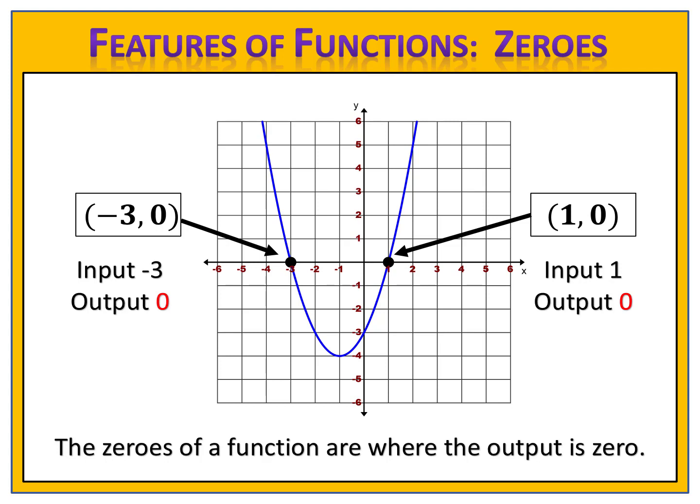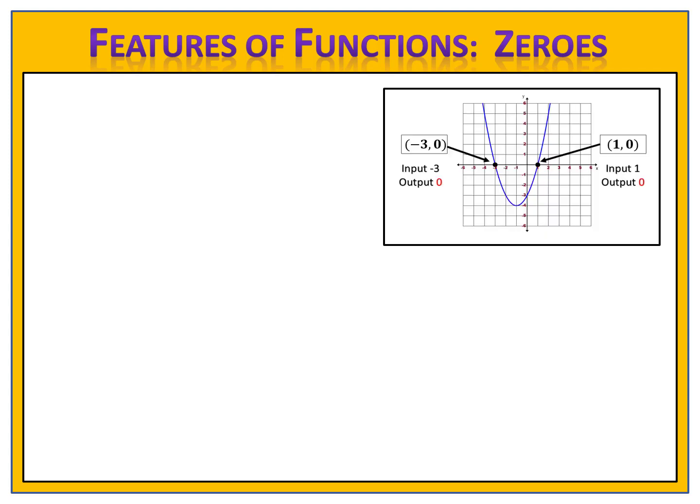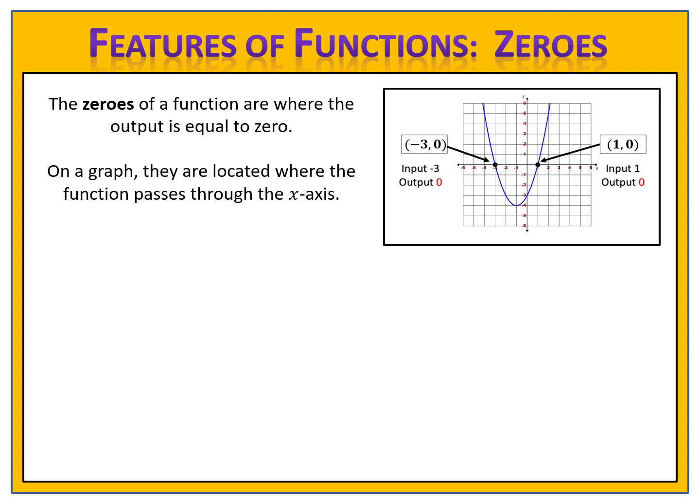Let's make note of a few important things you want to know about zeros. First, the zeros of a function are where the output is equal to zero. Second, on a graph, the zeros are located where the function passes through the x-axis. These points are also called the x-intercepts, because this is where the graph passes through the x-axis.